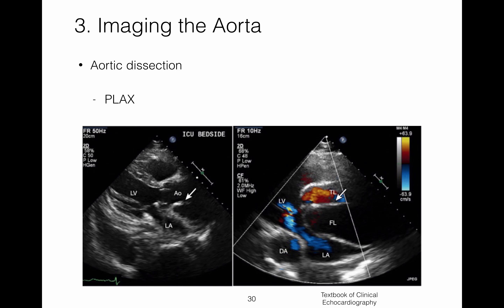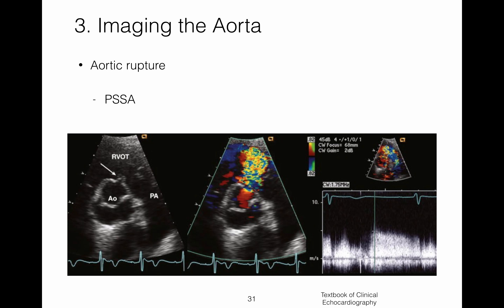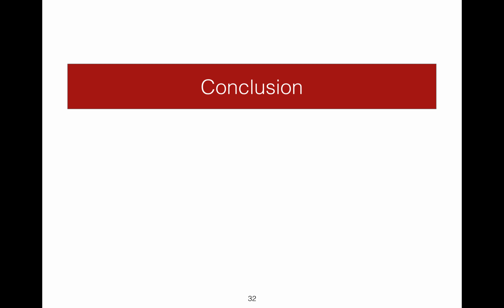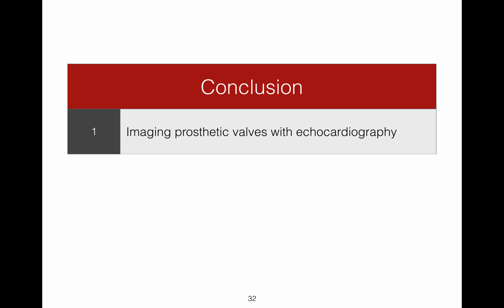Aortic dissection is a serious complication that results in the development of a false lumen into which blood can travel. 2D and Doppler images are required to determine the location of the tear in the lumen, the extent of the dissection, and blood flow within the aorta. Perhaps the most serious complication resulting from aortic disease is aortic rupture. Prompt 2D and Doppler images can help to identify the site of dissection and the direction of blood flow. In conclusion, this lecture has included aspects of imaging required to evaluate prosthetic and bioprosthetic heart valve function, and key echocardiographic features of infective endocarditis and specific diseases of the aorta.